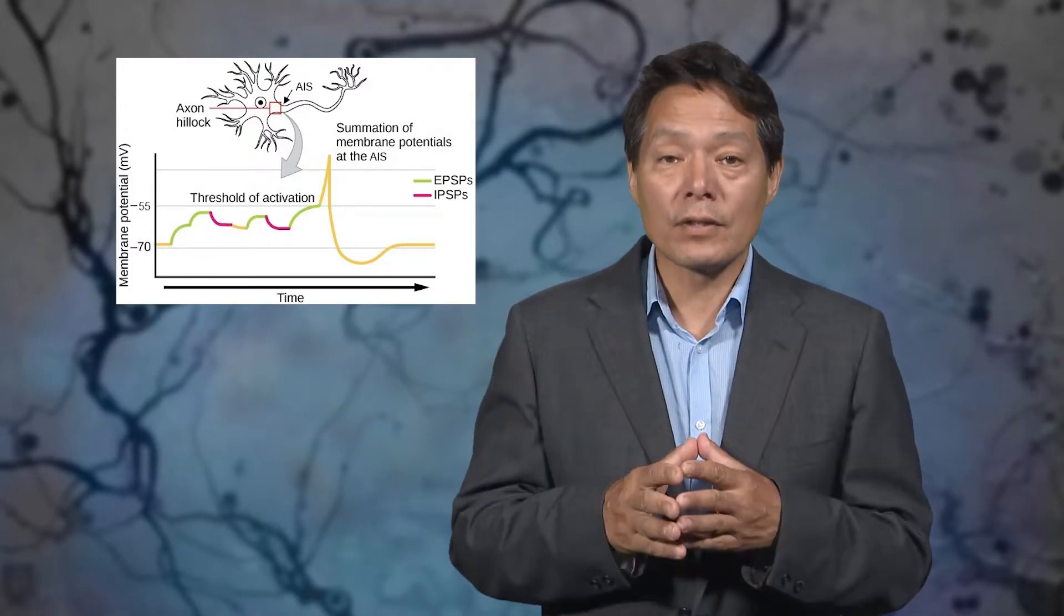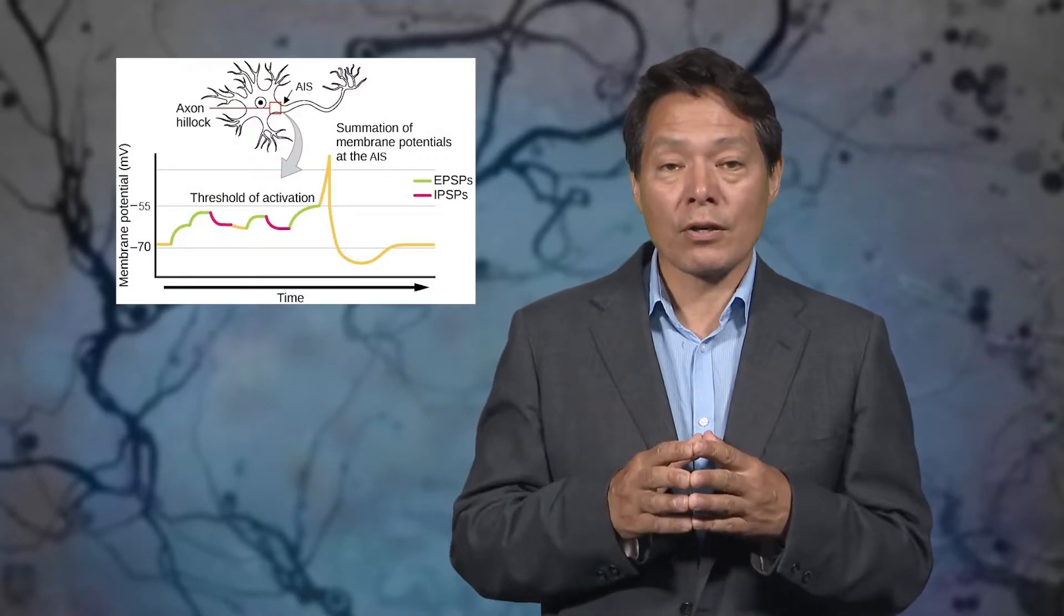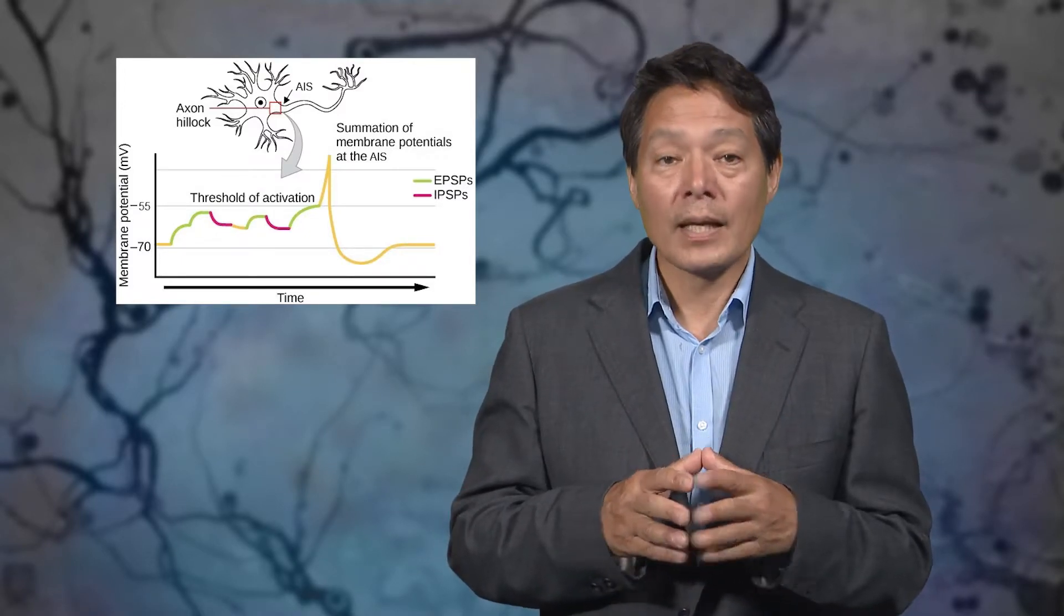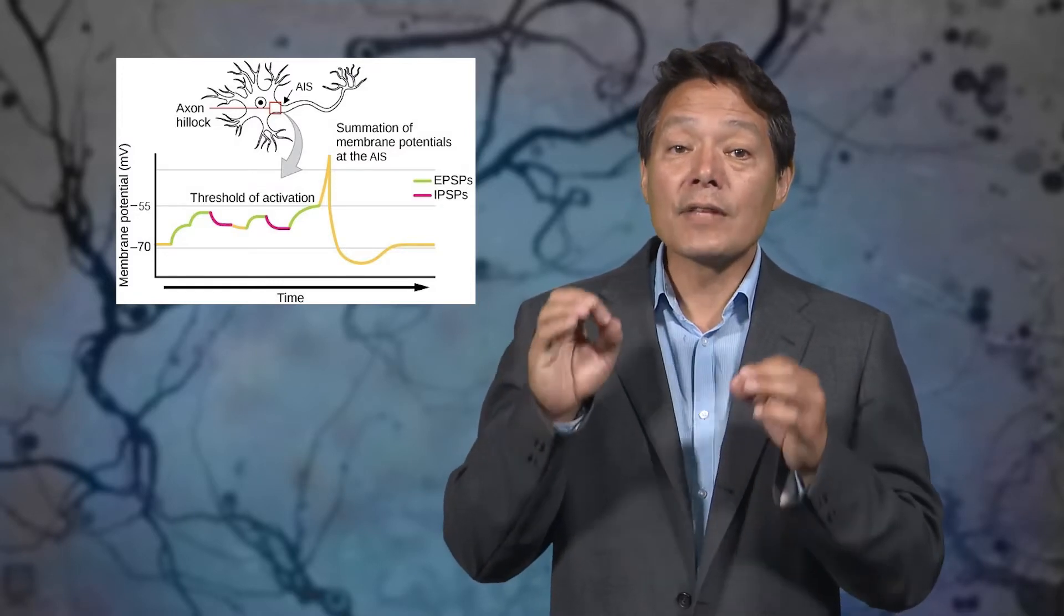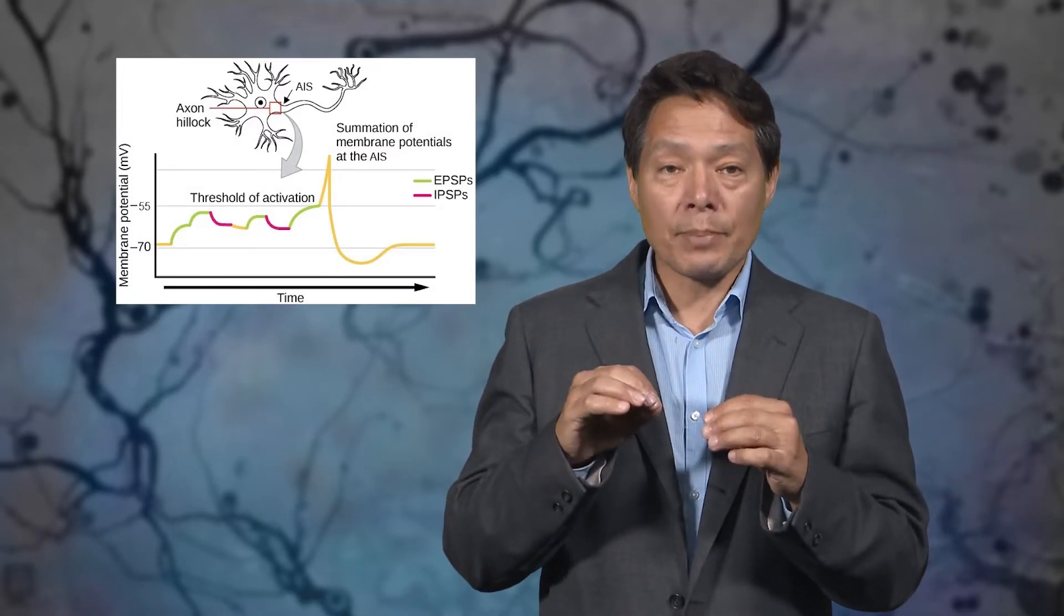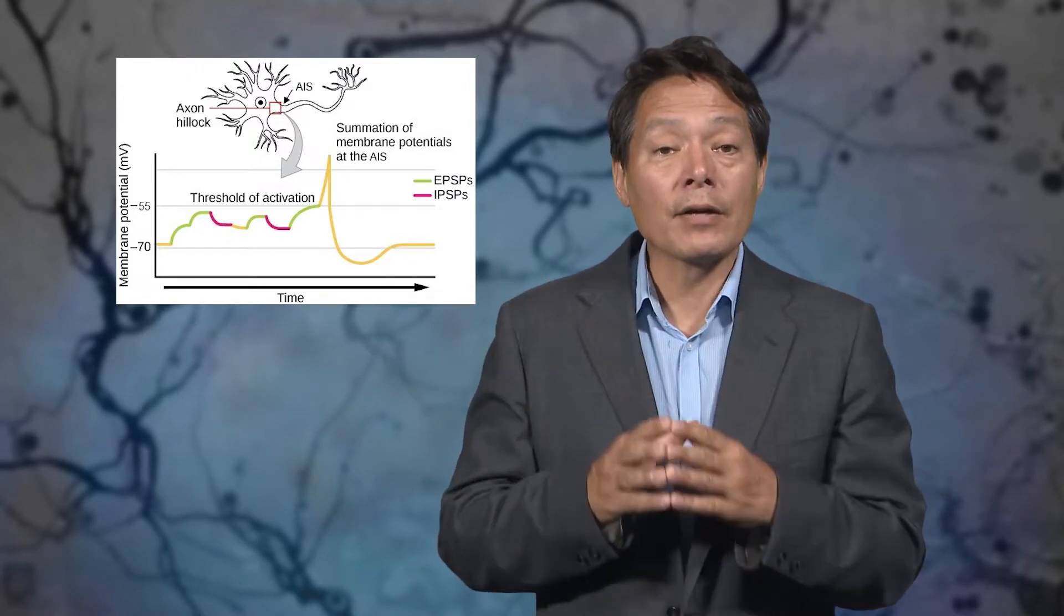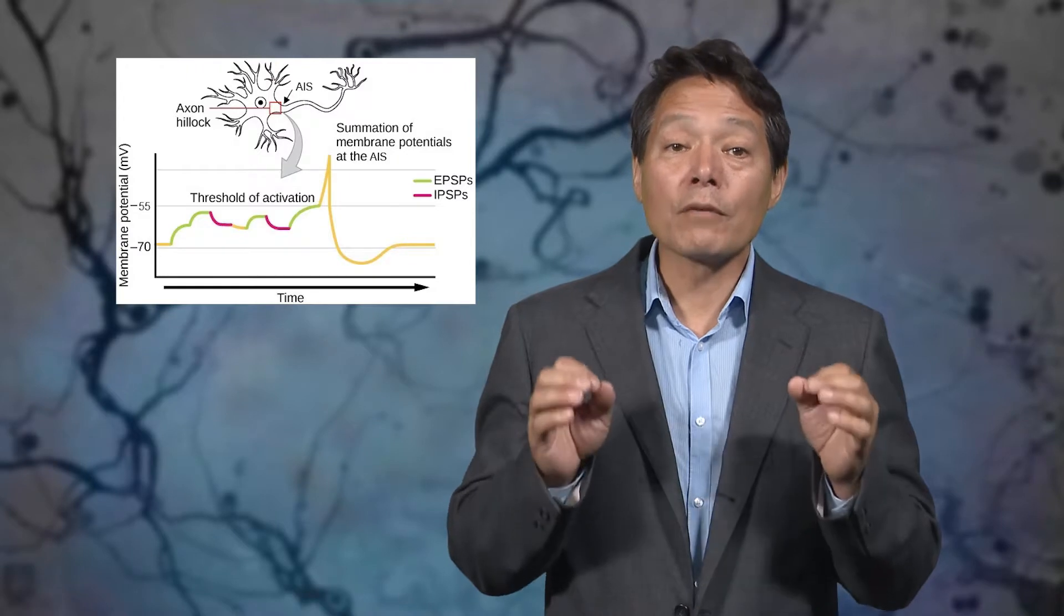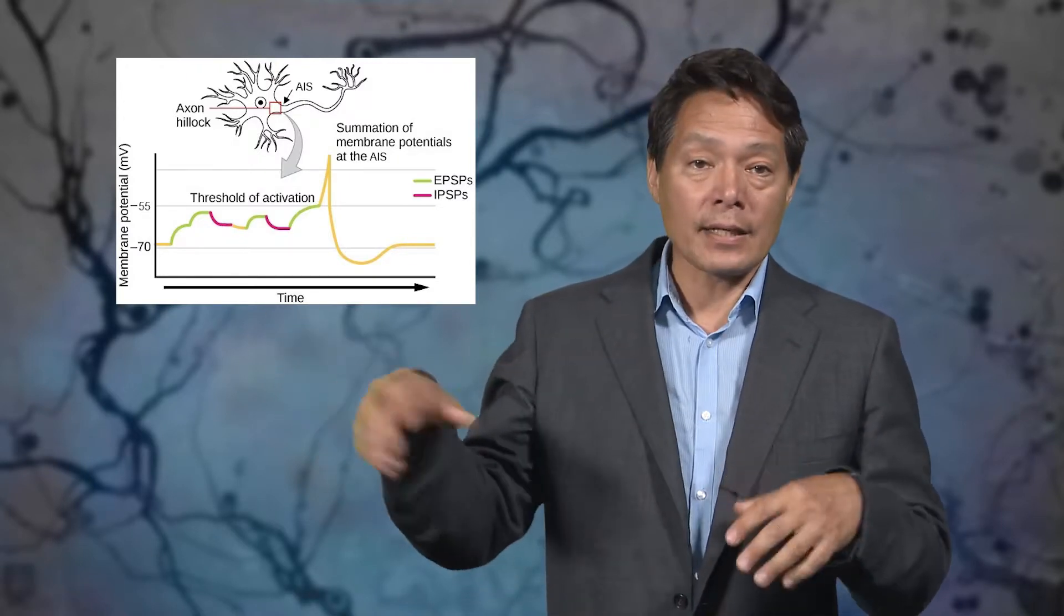So another way to think of a neuron is to say that it forgets that it was ever excited once it has returned to its resting potential. Now, if EPSPs do successfully add up, and if the sum of EPSPs pushes the potential above the so-called firing threshold for the neuron, typically around minus 55 millivolts, then the neuron will fire an action potential away from the axon hillock down the axon.